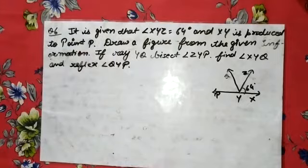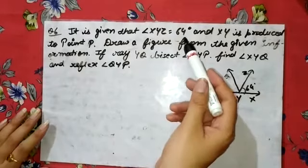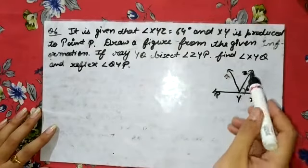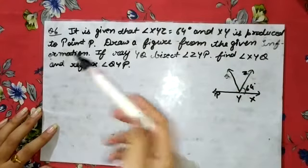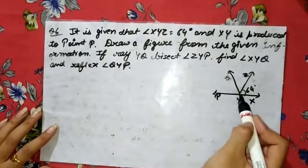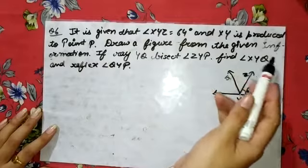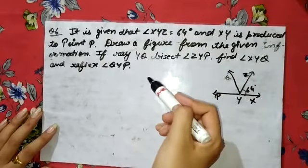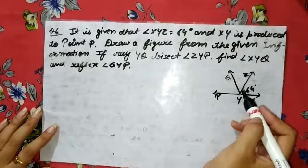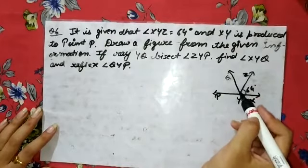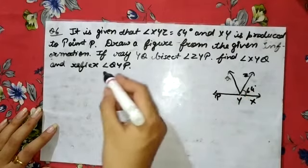In question number 6: it is given that angle XYZ is 64 degrees. XY is produced to P — so we extend XY to point P. Draw a figure from the given information. If ray YQ bisects angle ZYP, find angle XYQ and reflex angle QYP.